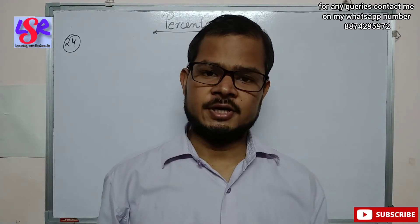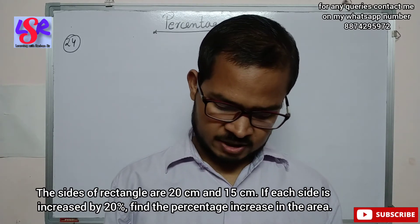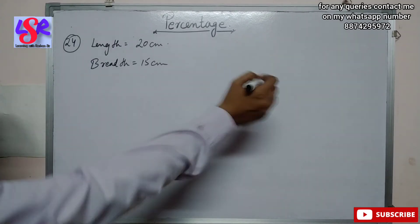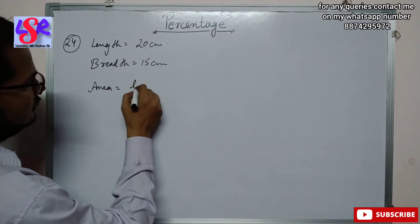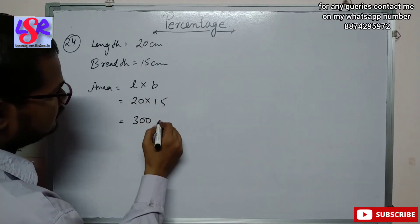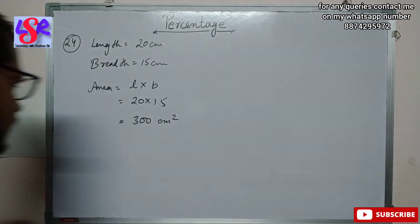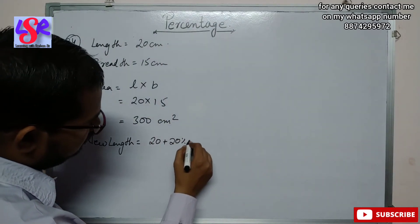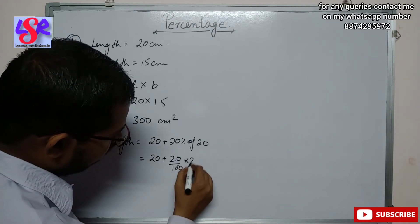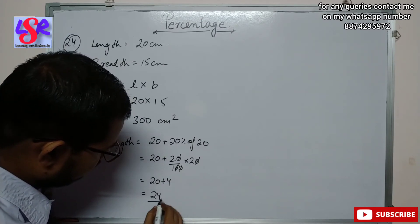Now we are moving to question number 24. Here we are having the sides of a rectangle as 20 centimeter and 15 centimeter. If each side is increased by 20 percent, find the percentage increase in the area. The length is 20 centimeter and the breadth is 15 centimeter, so the area is length into breadth, that is 20 into 15, which equals 300 centimeter square. Now we increase both length and breadth by 20 percent. The new length is 20 plus 20 percent of 20, and the zeros cancel giving 20 plus 4, that is 24 centimeter.